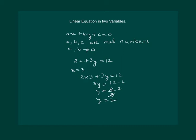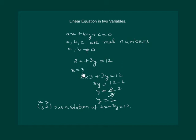So the ordered pair (3, 2), where 3 corresponds to the value of x and 2 corresponds to the value of y, is one of the solutions of the linear equation 2x plus 3y equal to 12. Similarly, we can substitute many different values of x and find more solutions of this equation. So that means a linear equation in two variables has infinitely many solutions.